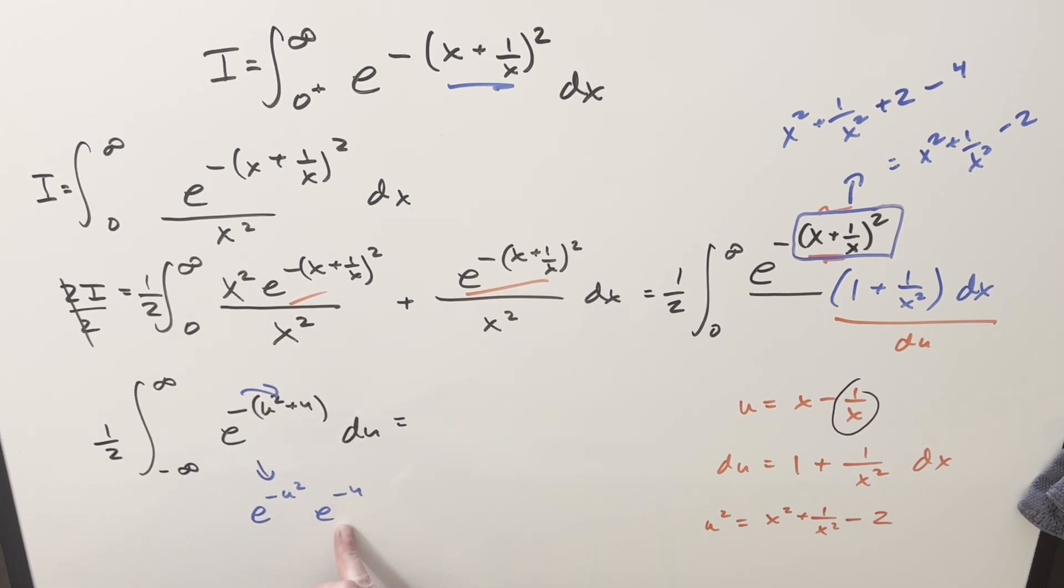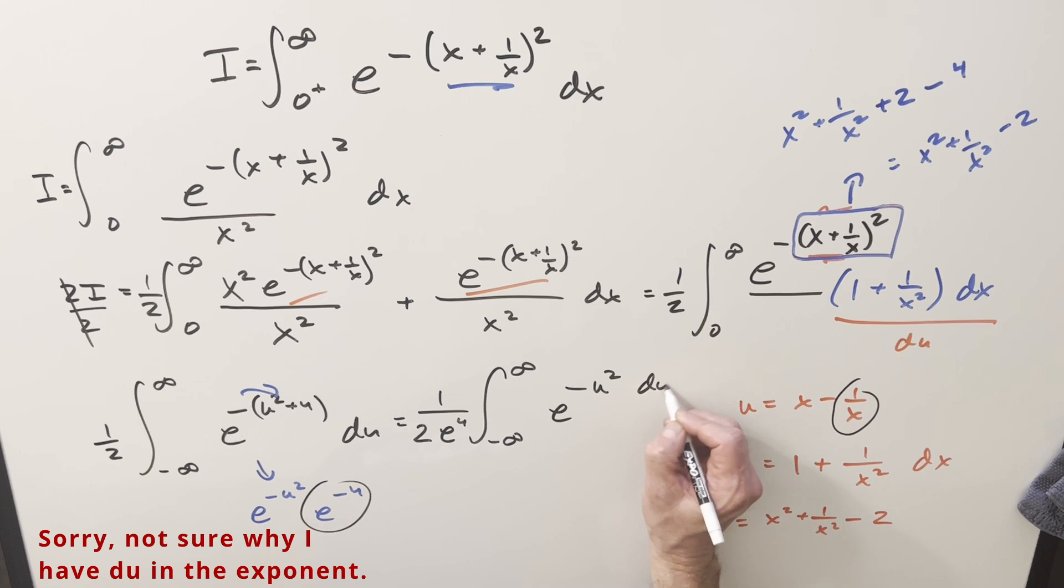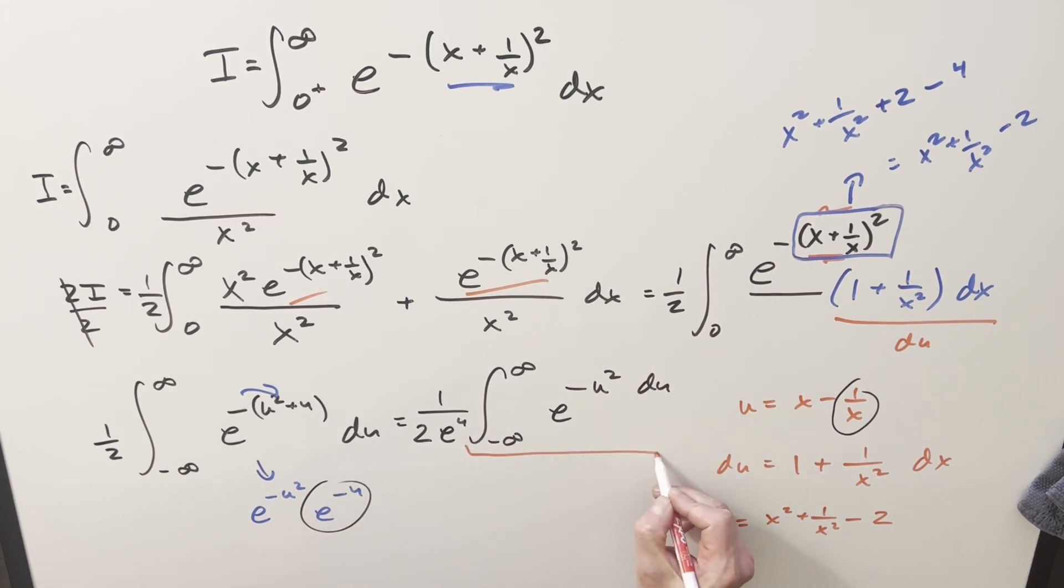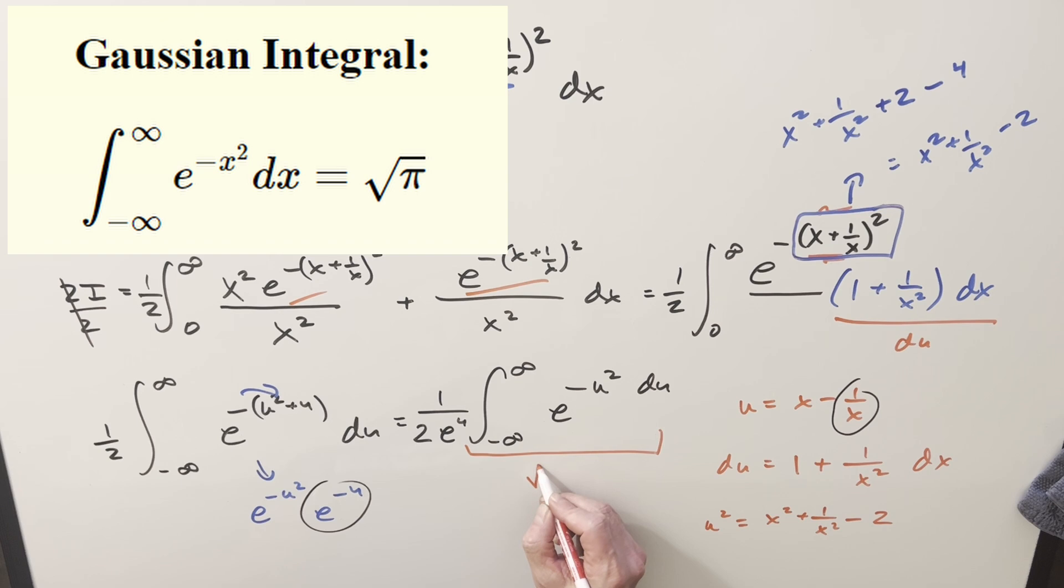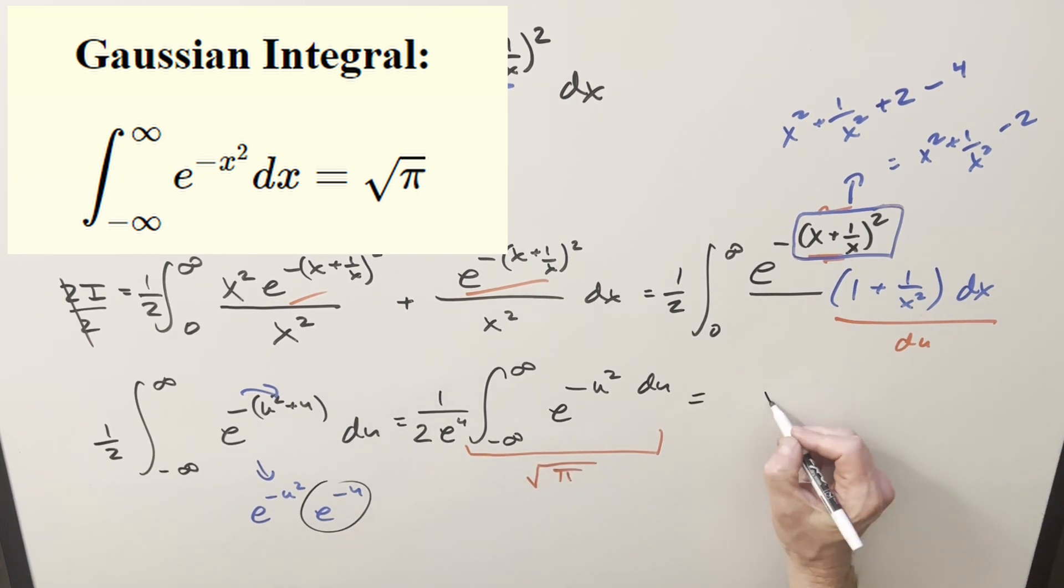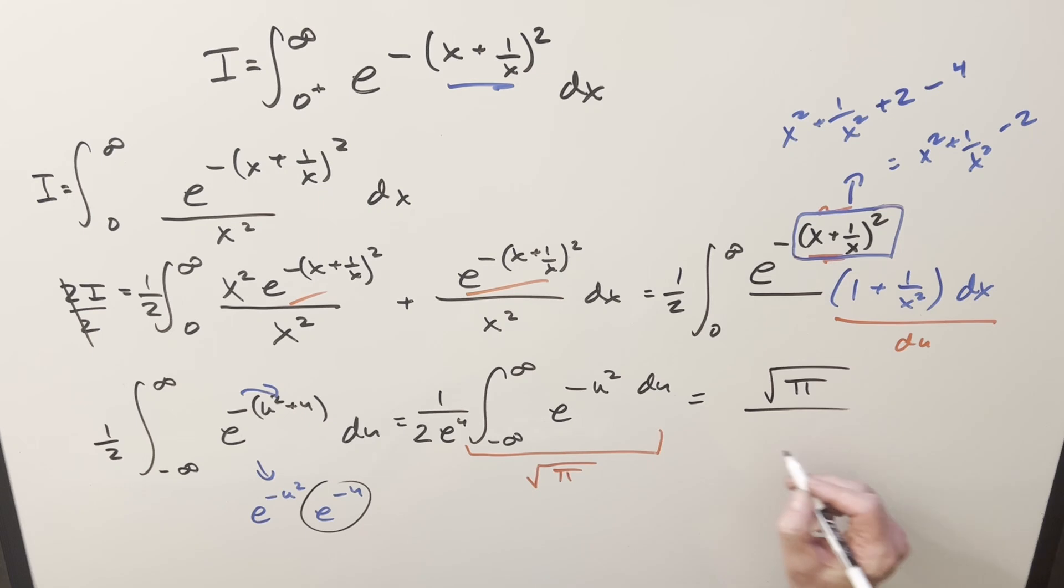So when I rewrite it, let's take e to the minus 4 and bring it outside. This is just a constant. So out front we can have 1 over 2 e to the 4th, still going minus infinity to infinity. And then what's left is just going to be e minus u squared du. But now this right here, this is just the full Gaussian integral. This has a known value of square root of pi. Multiplying it out, putting it all together. For my final solution, we have just square root of pi over 2 e to the 4th. And that's it.